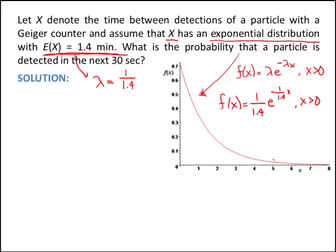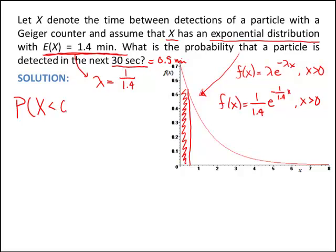So this is the exact probability density function. What we're trying to determine is the probability that a particle is detected in the next 30 seconds. Let's go ahead and change this to minutes — this is actually half a minute. So x is the time, and we're trying to find the probability that the time for the next particle detection is within half a minute. So we're trying to find this area under the curve, which is the probability that x is less than 0.5.